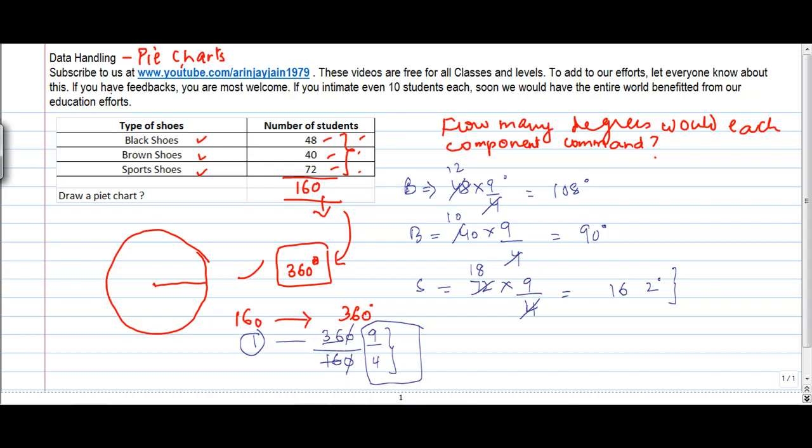So now let us start doing this. First I take the black shoes. The black shoes basically are 108 degrees. Now we know 90 degrees is somewhere here. So 108 degrees should come something around this number. So this portion, which is 108 degrees, is the black shoes.